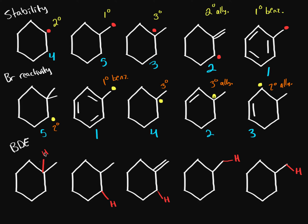For bond dissociation energy: a high BDE means it takes a lot of energy to create a radical. When we break off a hydrogen, we form a radical on the hydrogen and on the carbon. We label where the radicals will form on each molecule — tertiary, secondary, secondary allylic, primary, and primary — and identify whether each is primary, secondary, tertiary, allylic, or benzylic.